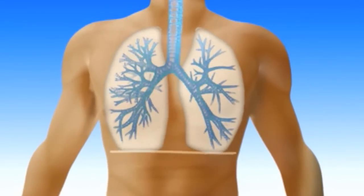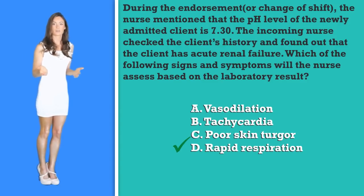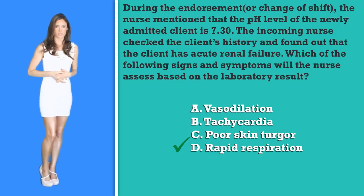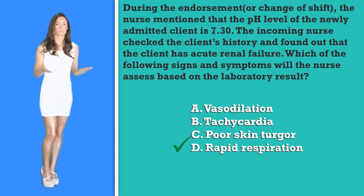Initial signs of acidosis include changes in level of consciousness, headache, and restlessness. A late sign of acidosis is Kussmaul breathing, which consists of rapid, large tidal volume breaths because the lungs are trying to regulate carbon dioxide. This makes the correct answer option D — clients with acidosis caused by acute renal failure may develop Kussmaul respirations. Vasodilation and tachycardia are not associated with acidosis, and poor skin turgor is a finding in chronic renal failure, not acute renal failure.